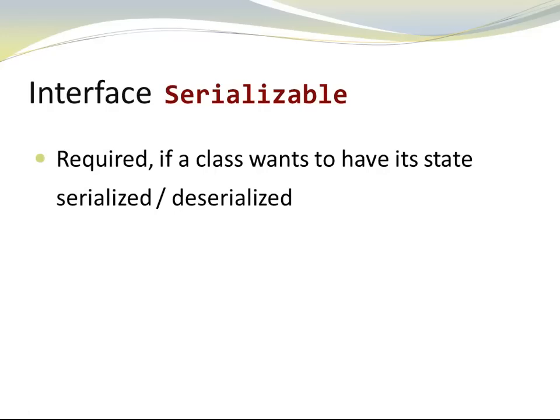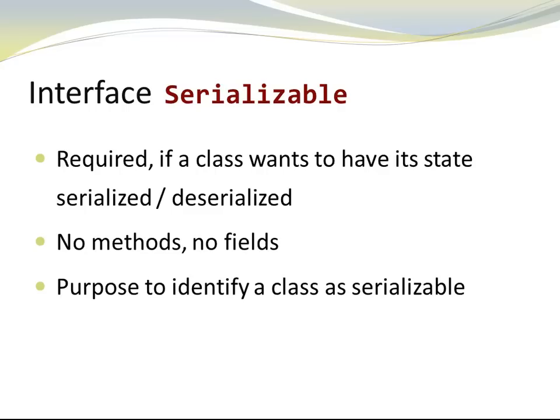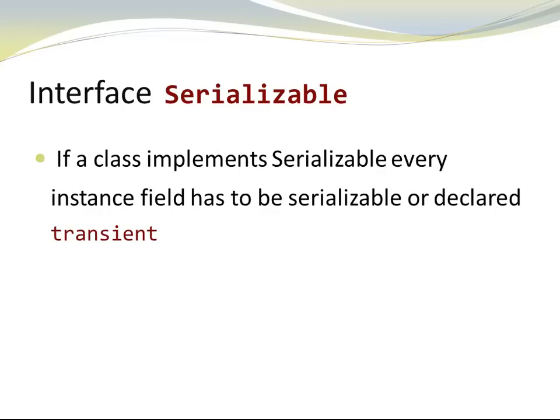Before we have a look at a code example, I want to introduce you to the interface Serializable. If a class wants to have its state serialized or deserialized, it needs to implement the interface Serializable. When you look at the members of the interface Serializable, you'll realize that there are none — no methods, no fields. The interface Serializable has the only purpose to identify a class as serializable. If a class implements Serializable, every instance field has to be serializable or declared as transient. Transient means that this instance field will be ignored during serialization.